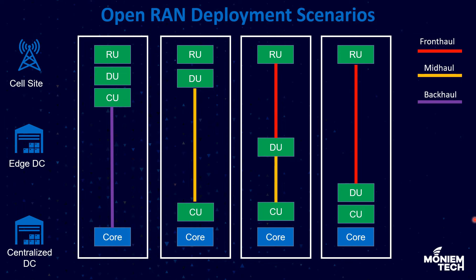The fourth scenario: the CUs can be hosted at an edge data center, but when logically possible it is more feasible to pool them further away at a centralized data center. We can pull both the DU and CU and host them in the data center, keeping in mind the fronthaul latency and bandwidth. The benefit of hosting the CU and DU in the data center is that we can support many DUs and RUs from different sites from the same location.